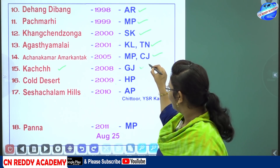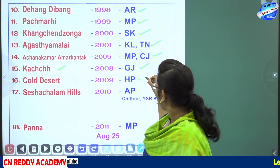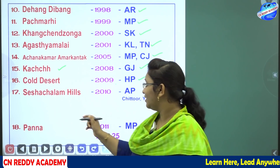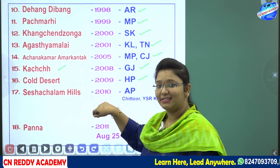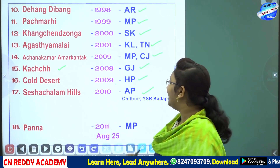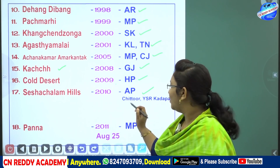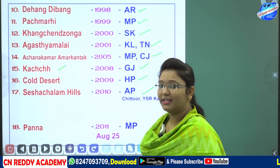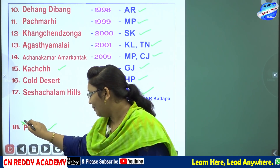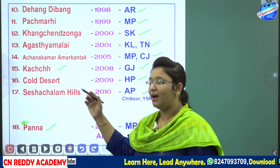Next is Kutch — the Rann of Kutch — located in Gujarat. Then Cold Desert, located in Himachal Pradesh. Next is Sesha Chalam Hills, located in Andhra Pradesh, in the Chittoor or Vaisar Kadapa district.